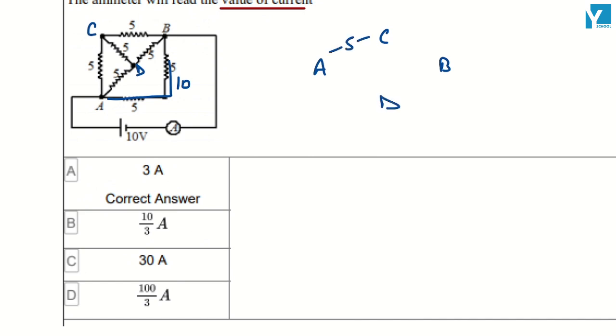This is 5, this is 5. This is a balanced Wheatstone bridge. This means the central resistance.